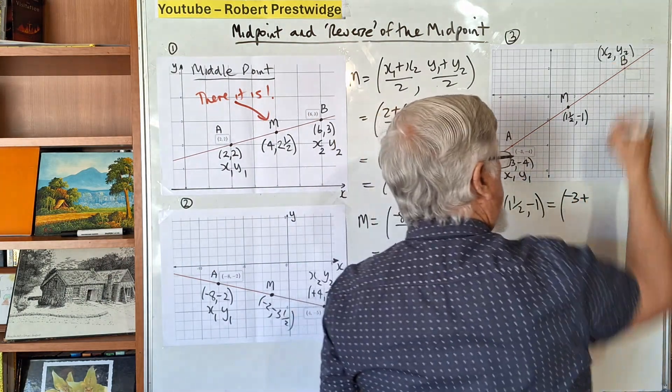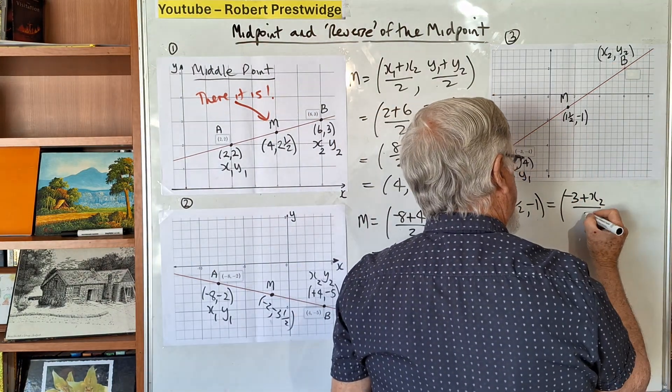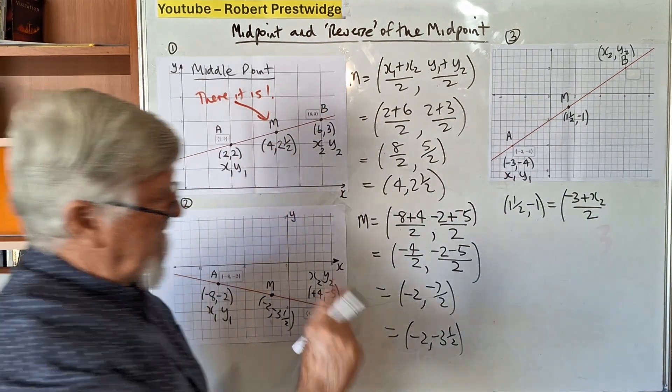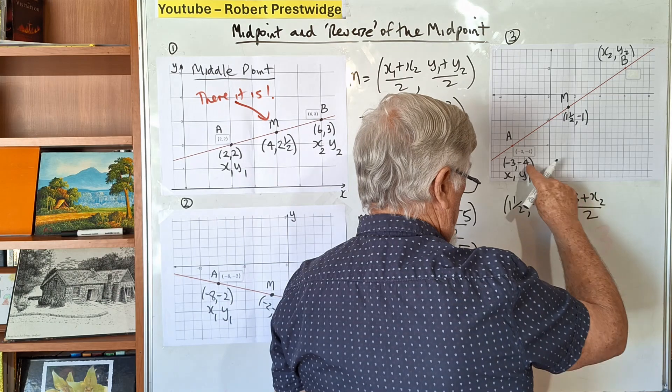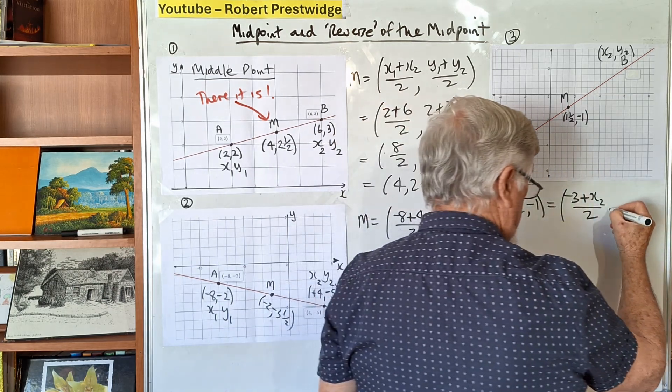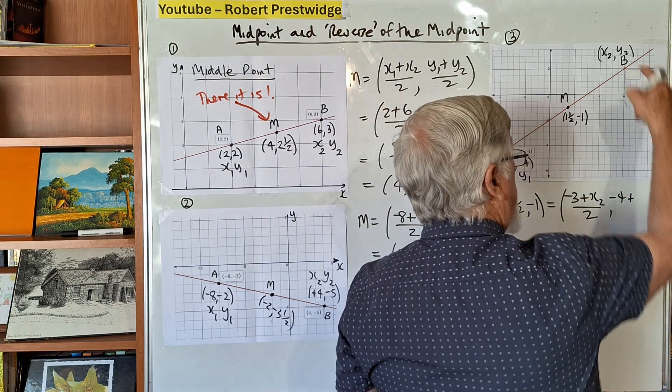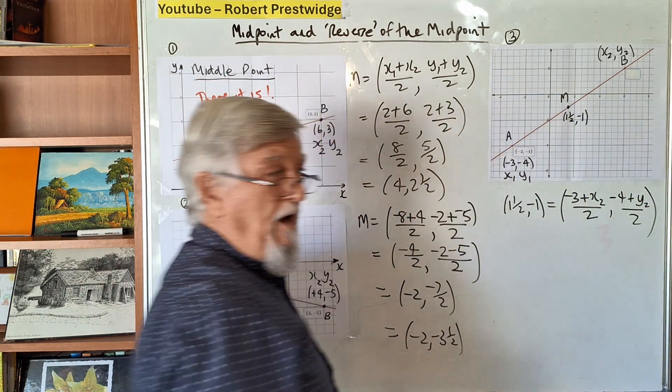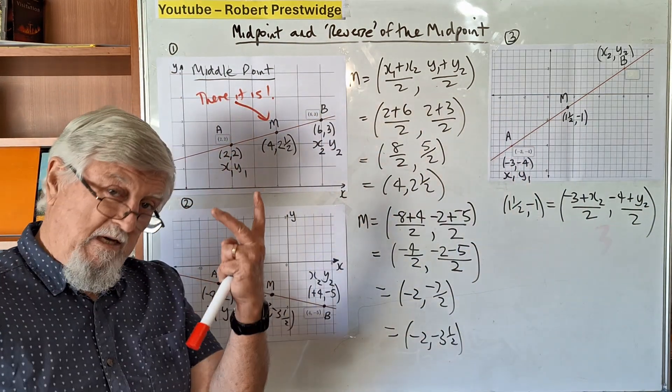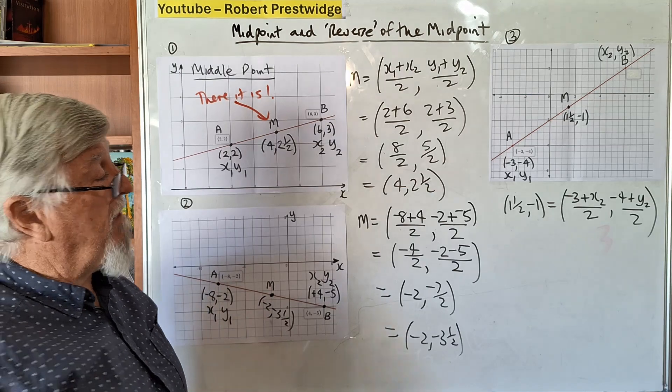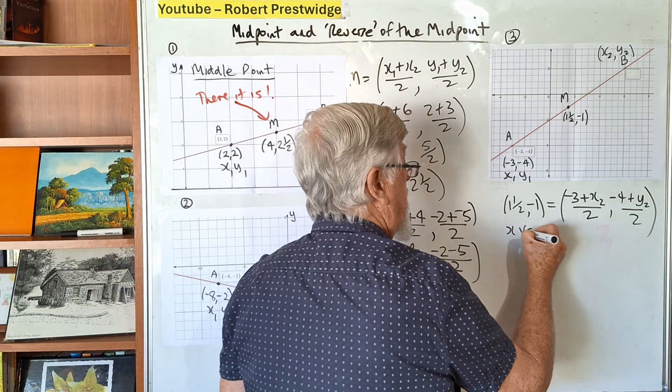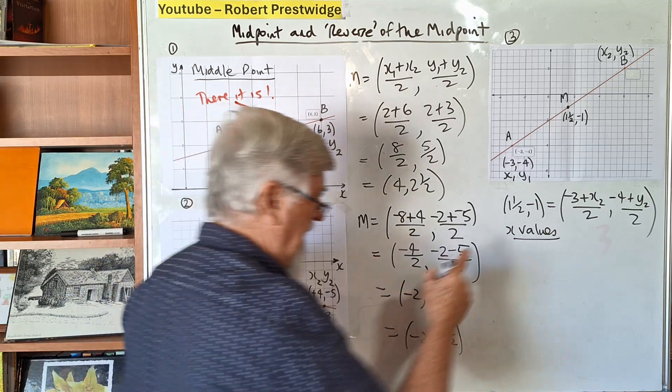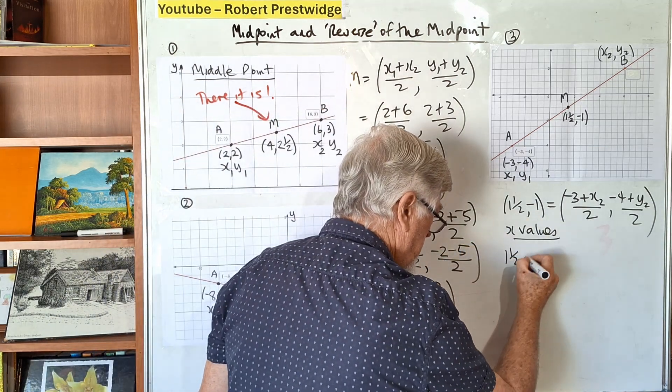We know that equals (x₁ + x₂)/2. Let's go through it slowly. x₁ plus x₂ - we don't know what x₂ is. Then y₁ plus y₂ all over 2.